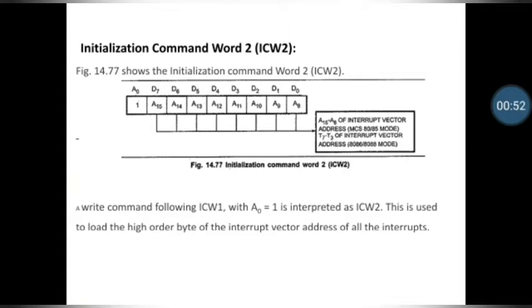As discussed in the last lecture, the first two initialization command words, ICW1 and ICW2, are compulsory, while ICW3 and ICW4 are optional. Those command words depend on the mode used by your processor, that is the 8259. In the ICW2 format, the last bit MSB A0 indicates you are using initialization command word 2, and the remaining bits from D0 to D7 are used for the interrupt vector address, loading the higher order byte of the interrupt vector address of all interrupts.